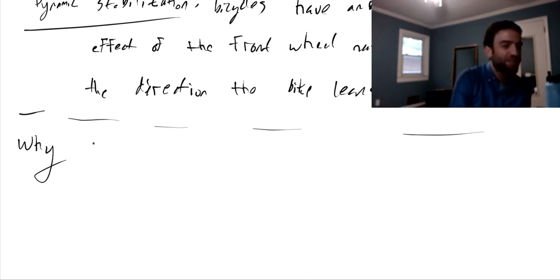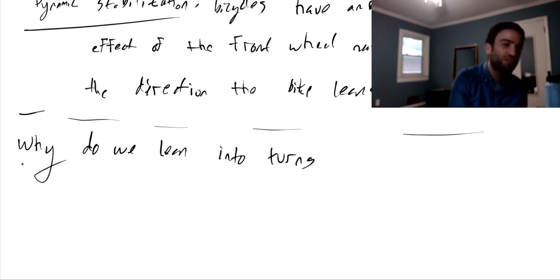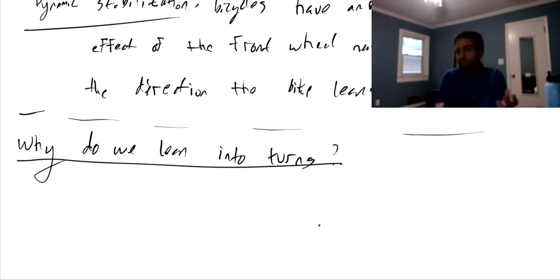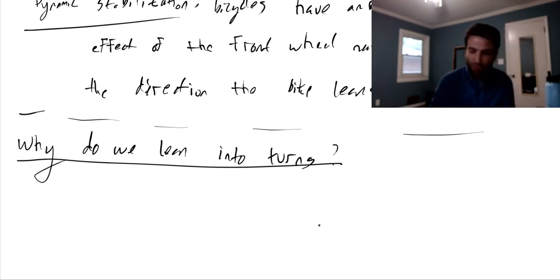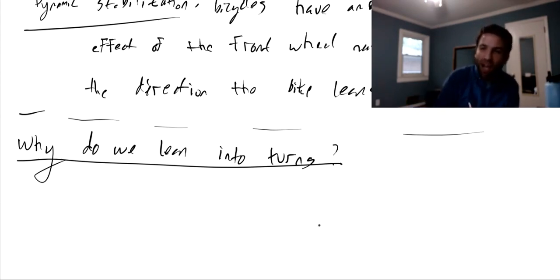While we're talking about bicycles, we might as well talk about why we lean into turns. This is true if you're making a turn on a bicycle, but not only bicycles - if you're riding a motorcycle, you do this. If you're skiing down a mountain and you take a turn, you do this. If you're water skiing, or even if you're just running around a very tight turn, you'll lean into that turn. And why do we do this? It's another form of dynamic stabilization.